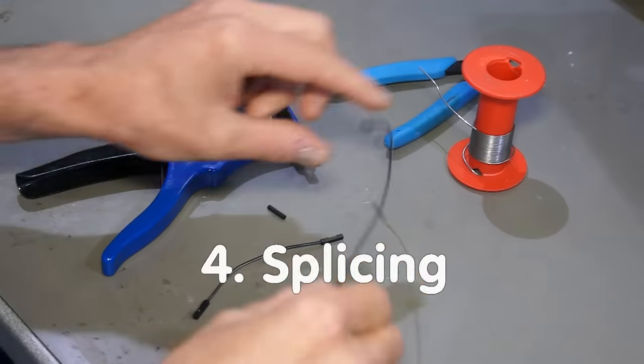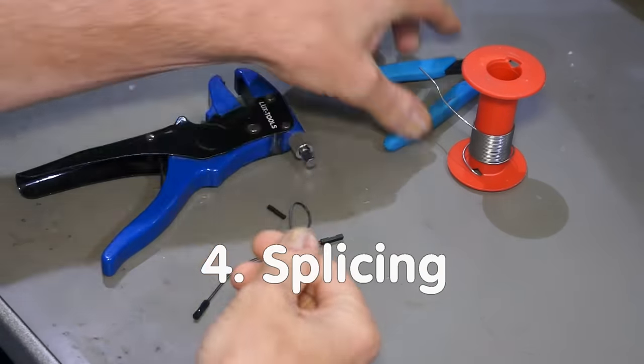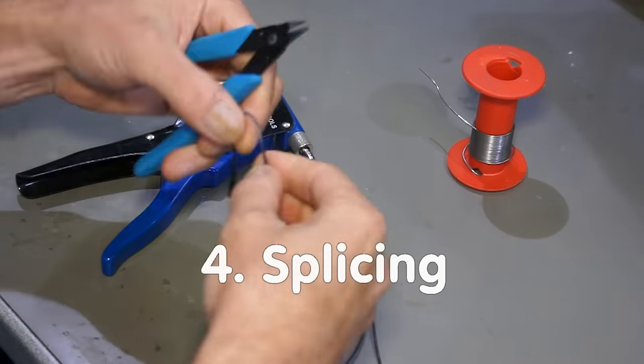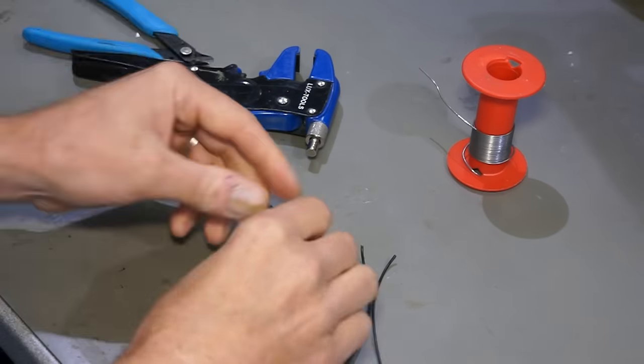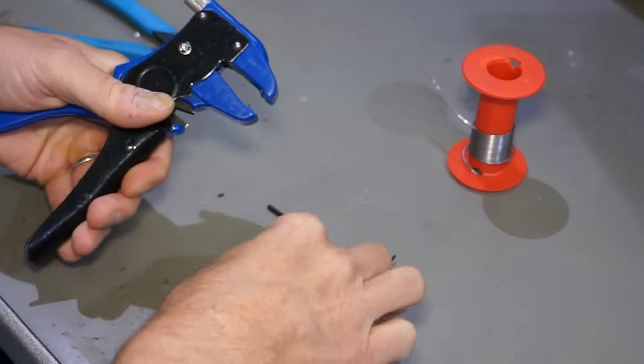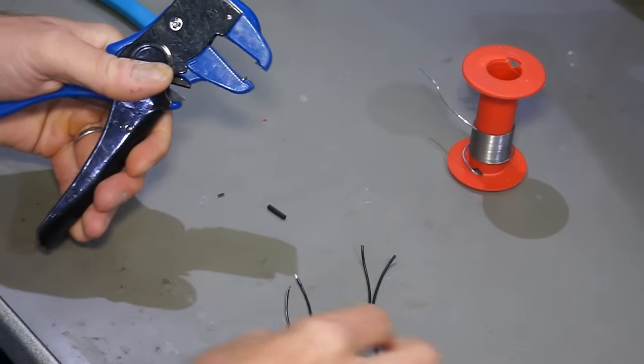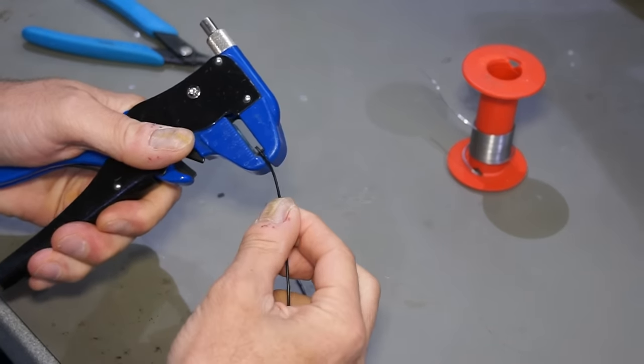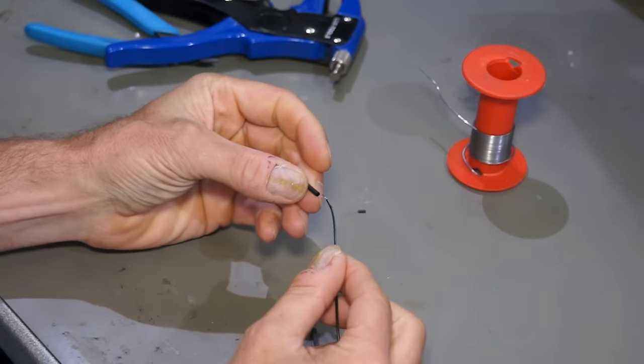Trick number four: Splicing. Sometimes I need two pins connected to plus or to ground. Here, I cut two wires with the same color in half and solder them together. I use heat-shrink tubes to protect the junction.